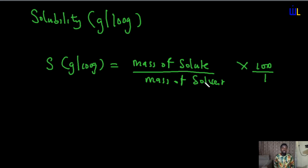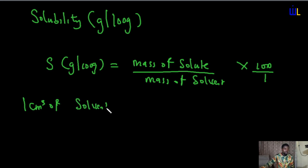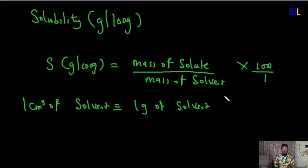I'd like to mention that 1 cm³ of solvent is equivalent — not equal, but equivalent — to 1 gram of solvent. So if in a question you have 10 cm³, it means it's equivalent to 10 grams. Sometimes they won't give you the gram equivalent of the solvent, but just have in mind that when solving solubility questions, 1 cm³ of solvent is equivalent to 1 gram of solvent.